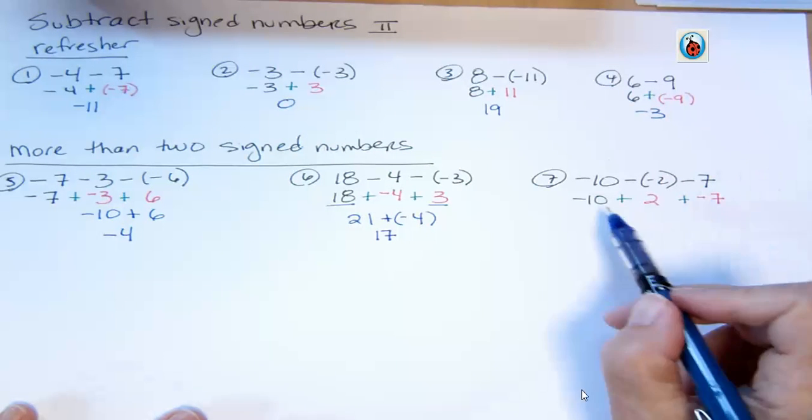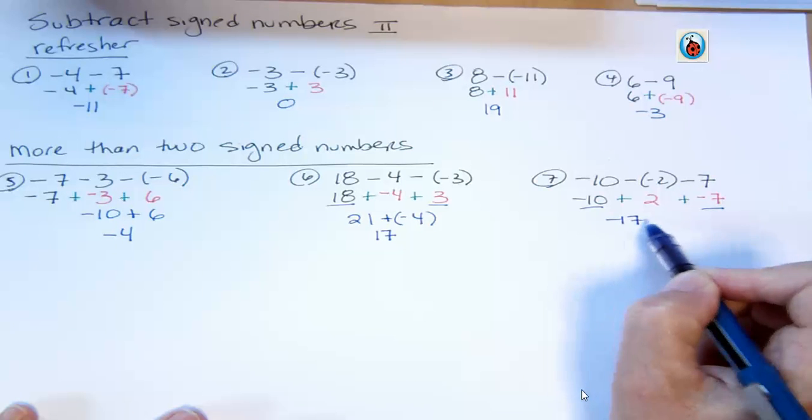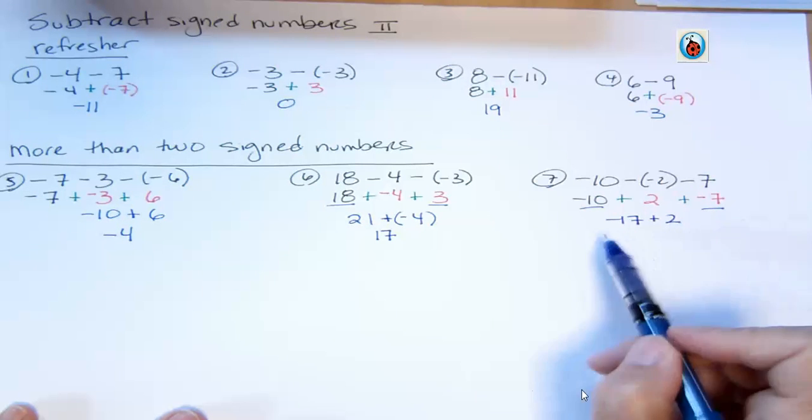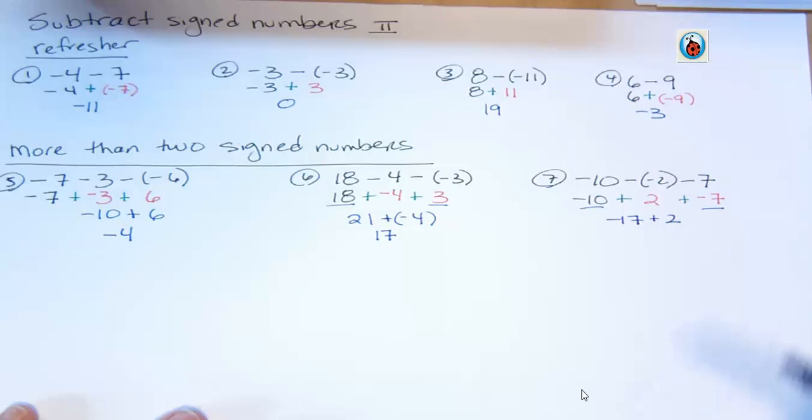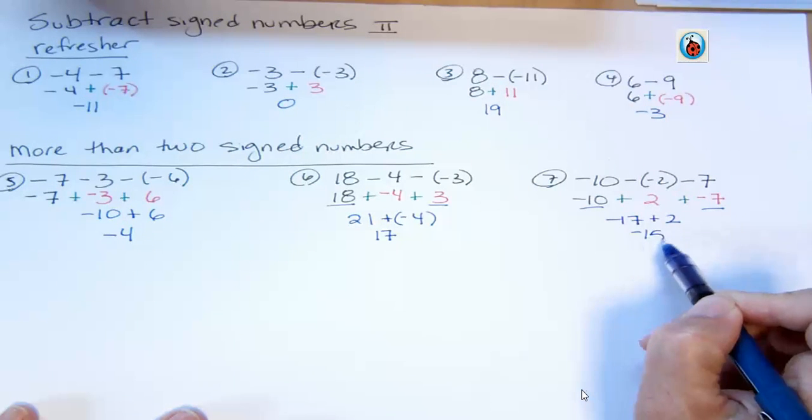And over here, I'm going to combine all my negatives together. I got negative seventeen. I have more negatives than positives now as I combine my, compare my negatives and positives. I have more negatives by fifteen, so that would be negative fifteen.